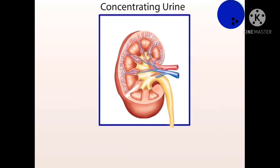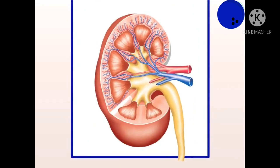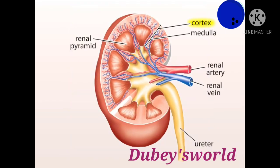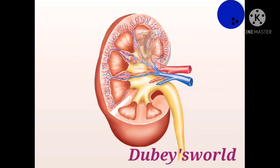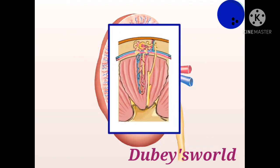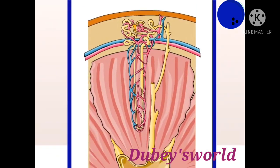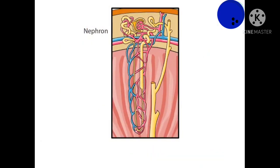The internal structure of the kidney includes an outer cortex and an inner medulla. The ureter divides into branches, the ends of which envelop medullary tissues called renal pyramids. The actual work of the kidney is carried out by functional units called nephrons. Each human kidney contains about a million nephrons.